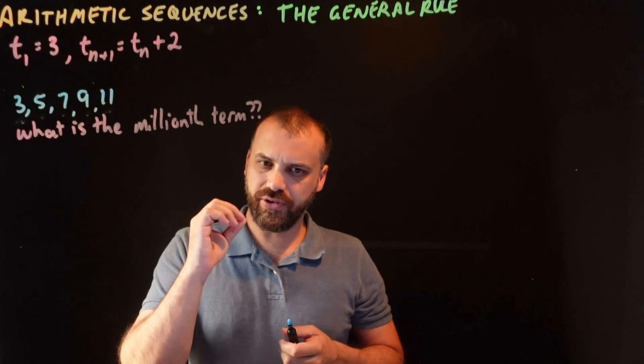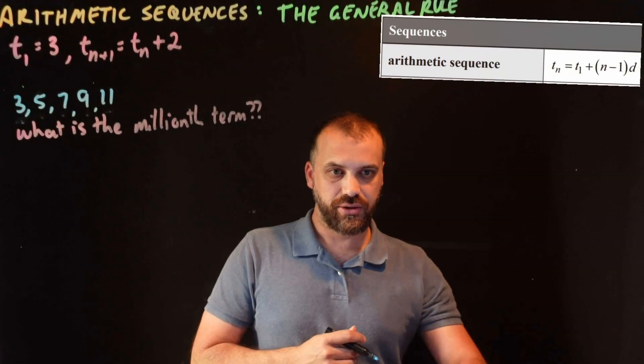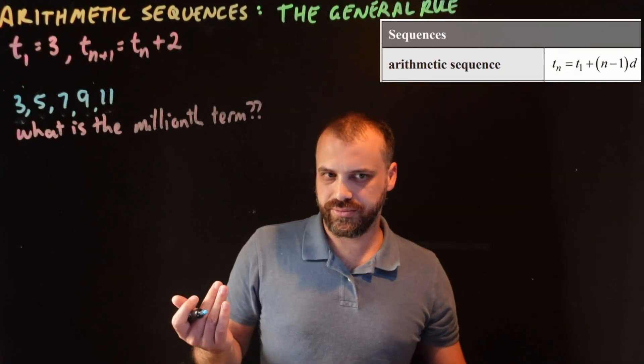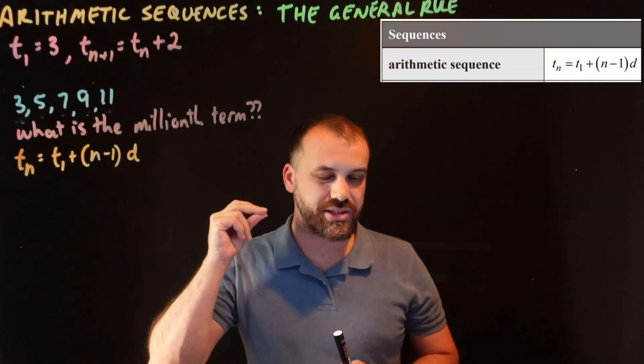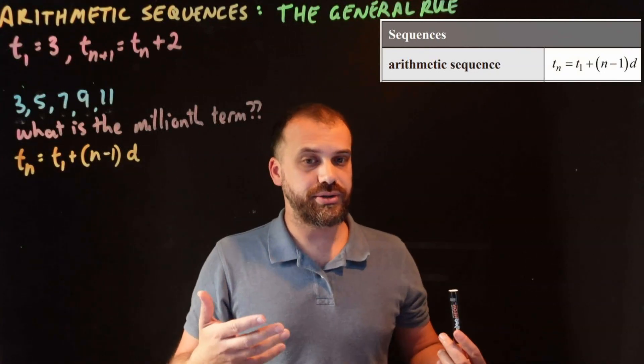I do have a faster way to get there, and that faster way is this formula right here. Let's look at what it's doing. This formula is designed to tell me straight away any term that I want to know. So I said, what's the millionth term?